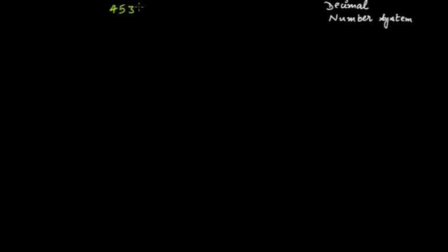The numbers which we use in our day-to-day life are based on the decimal number system. I'm not going too deep into it, but just briefly — what exactly is the decimal number system? Suppose I take a number 45320. This number has been written in the form of the decimal number system. In this number, each digit is assigned to a place, and each place of the number has some value.